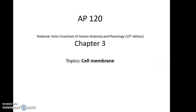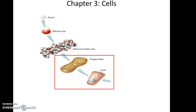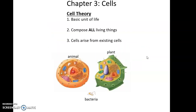AP Bio chapter 3, the topic is cell membrane. We are moving along from sizes up to organelles and cells. The cell theory, established over 100 years ago, states that the basic unit of life is the cell — so if something is alive, it must have at least one cell. Bacteria are alive because they are single-celled organisms.